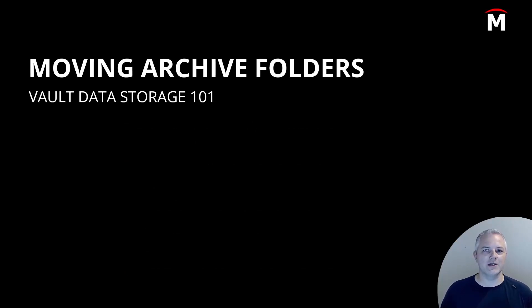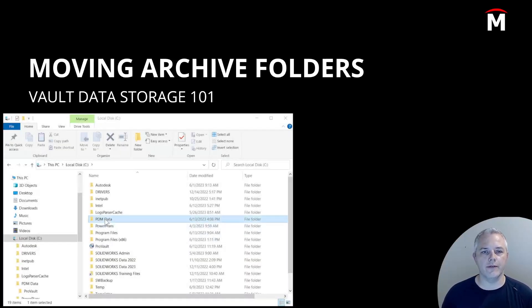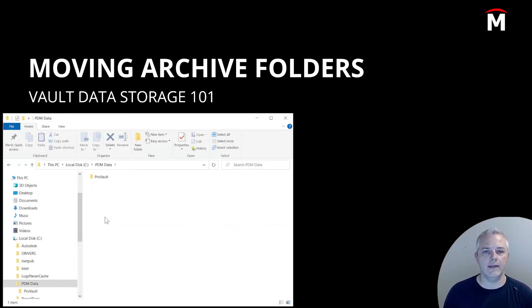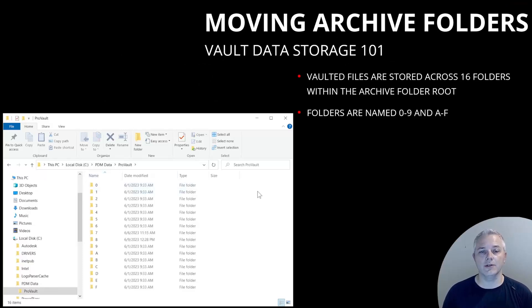Let's talk for a minute about how data is stored. For the examples in this video, we're going to use a vault named ProVault. I've chosen to store my PDM data in a folder under the root of the C drive named PDMData. If we browse to the root of the vault archive folder and then into the folder matching our vault name, we can see that there are 16 folders named 0 through 9 and A through F in the root of the vault data folder.